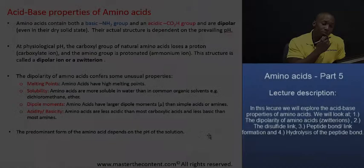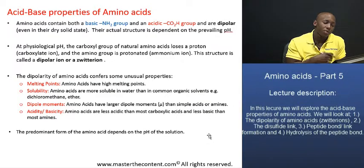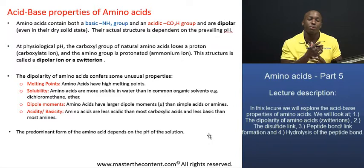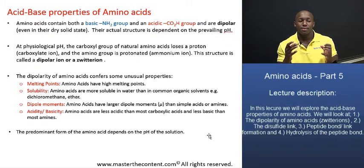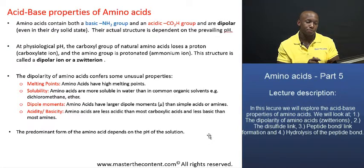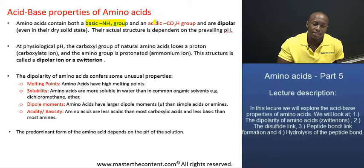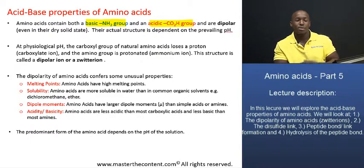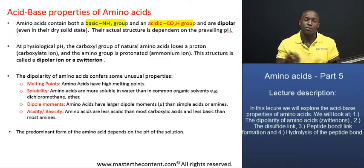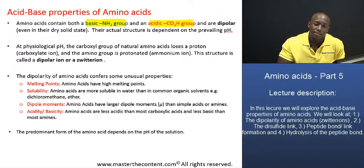So we're just going to move on and we're going to further probe the acid-base properties of amino acids. Amino acids contain both a basic amino group and an acidic carboxyl group. Because they have a basic group and an acidic group, they are therefore said to be dipolar.